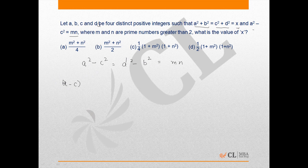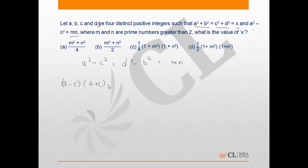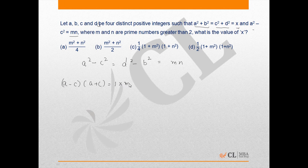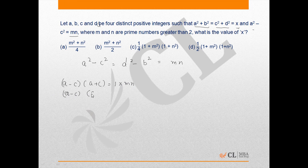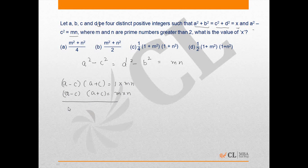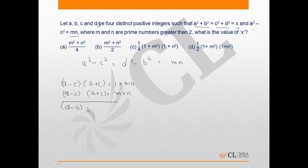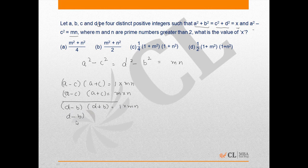That is, a minus c into a plus c turns out to be 1 into mn. Other case would be a minus c and a plus c turns out to be m into n. These are the two cases and similarly d minus b and d plus b again it's 1 into mn and d minus b d plus b turns out to be m into n.